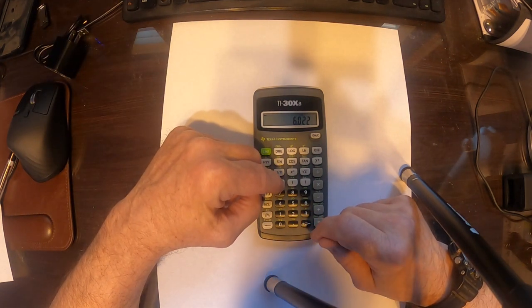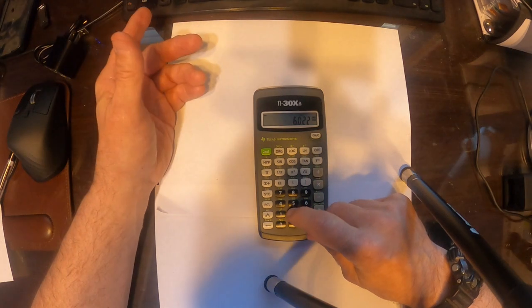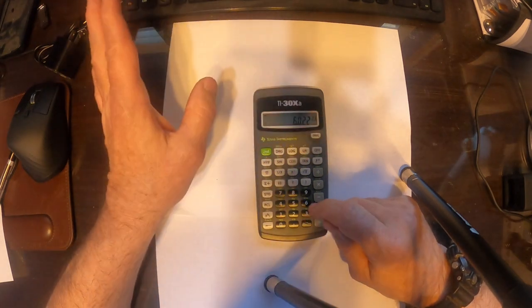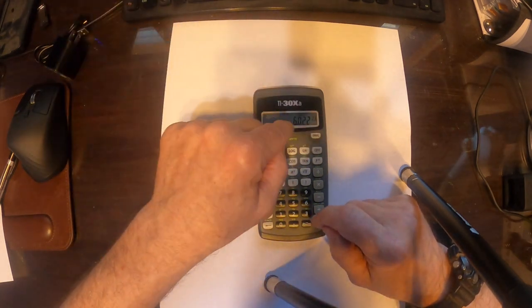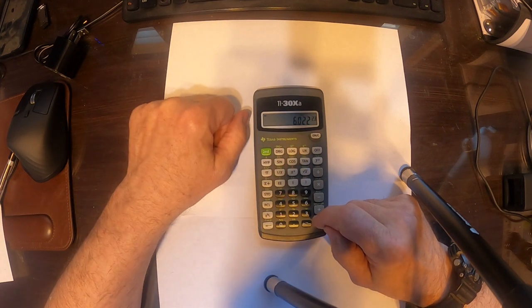Press that. That means times 10 to the, press EE, and then the exponent, 23. No 10s or anything like that. That means 6.022 times 10 to the 23rd.